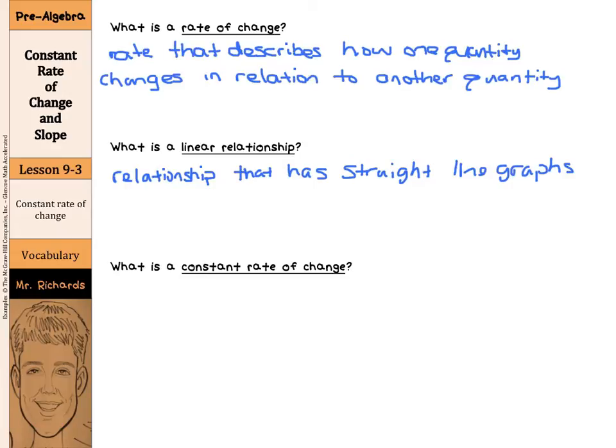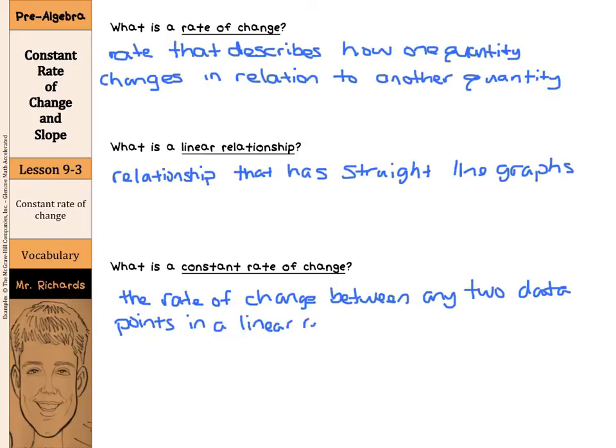And so what is a constant rate of change? This occurs when the rate of change between any two data points in a linear relationship is the same or, in other words, constant.